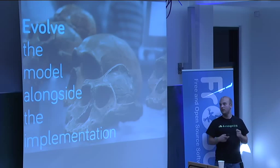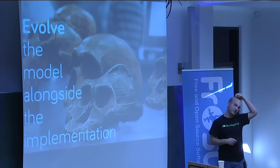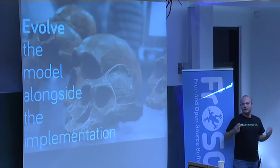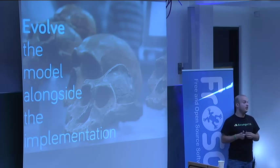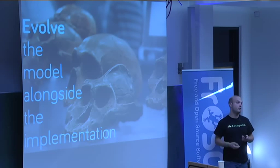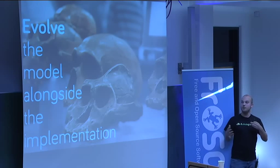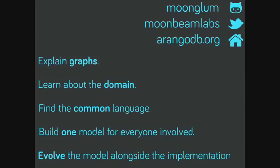You also need to evolve the model alongside the implementation — otherwise it sounds like waterfall with a five-year-old design document that no longer describes your system. The model must evolve. Now everyone on the team can contribute: the programmer says 'this doesn't work, we need to adapt the model'; the domain expert says 'our customers need something different, we need to evolve the model.' Those two evolve alongside each other. So the recipe is: explain graphs, learn about the domain, find the common language, build one model for everyone, and evolve the model alongside the implementation. If you do that, it results in a better product.